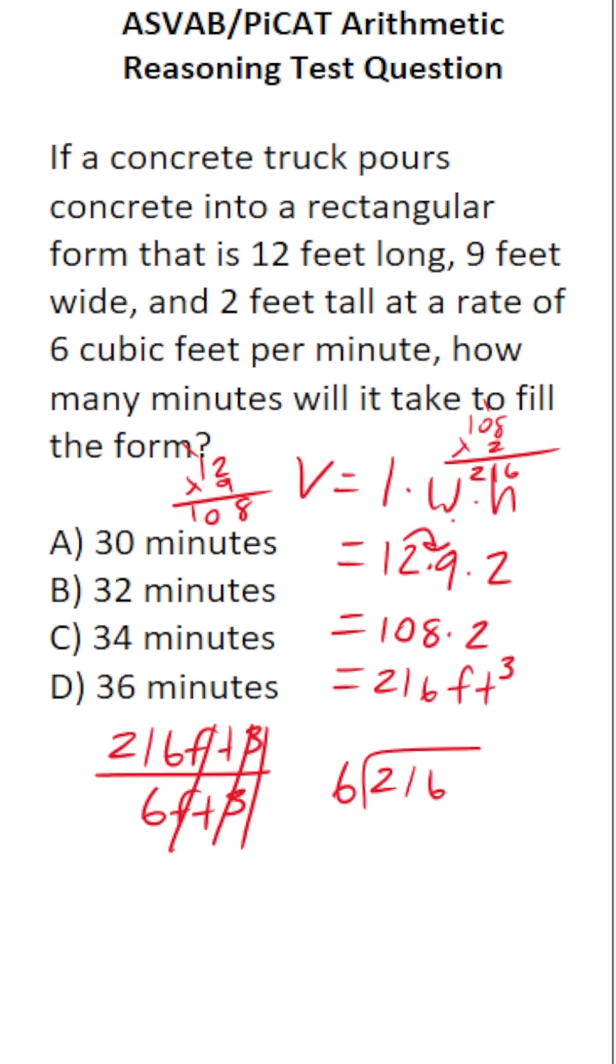How many times does 6 go into 21 without going over? That's going to be 3 times. 6 times 3 is 18. 21 minus 18 is 3. Drop down to 6. 6 times 6 is 36, so we have no remainder. In other words, it's going to take this truck 36 minutes to fill this rectangular form with concrete. The answer is D, 36 minutes.